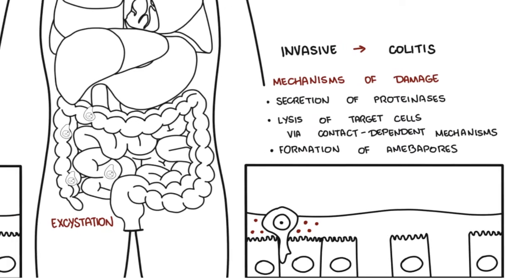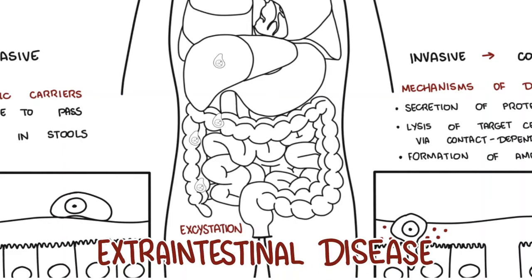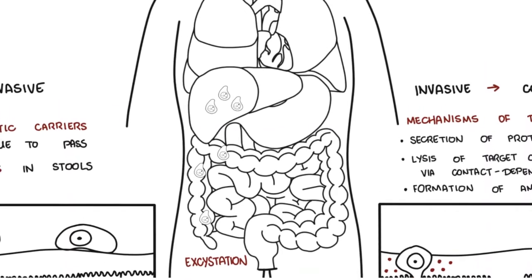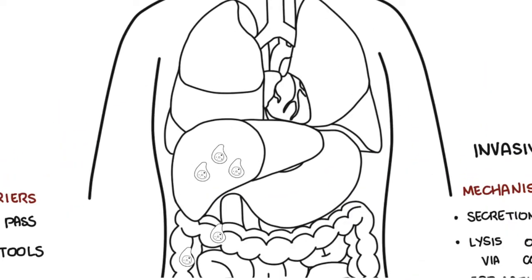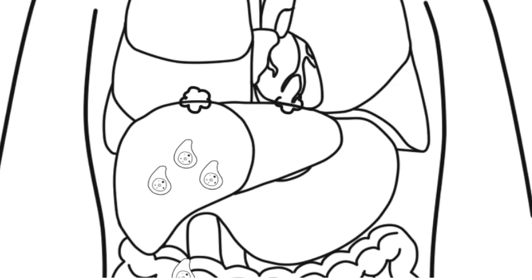The trophozoites can also invade the blood vessels, reaching extra-intestinal sites such as the liver, brain, and lungs. This is termed extra-intestinal disease. It does this because the trophozoites are able to enter the bloodstream. They will first enter the liver via the portal vein and can cause a liver abscess.